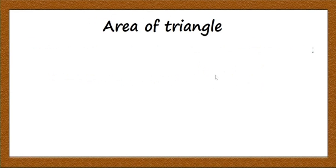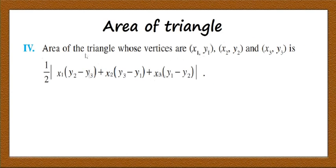The last formula is the Area of a Triangle: the area of a triangle whose vertices are (x₁, y₁), (x₂, y₂), and (x₃, y₃) is (1/2)|x₁(y₂ − y₃) + x₂(y₃ − y₁) + x₃(y₁ − y₂)|. The modulus symbol is used because area is always positive.